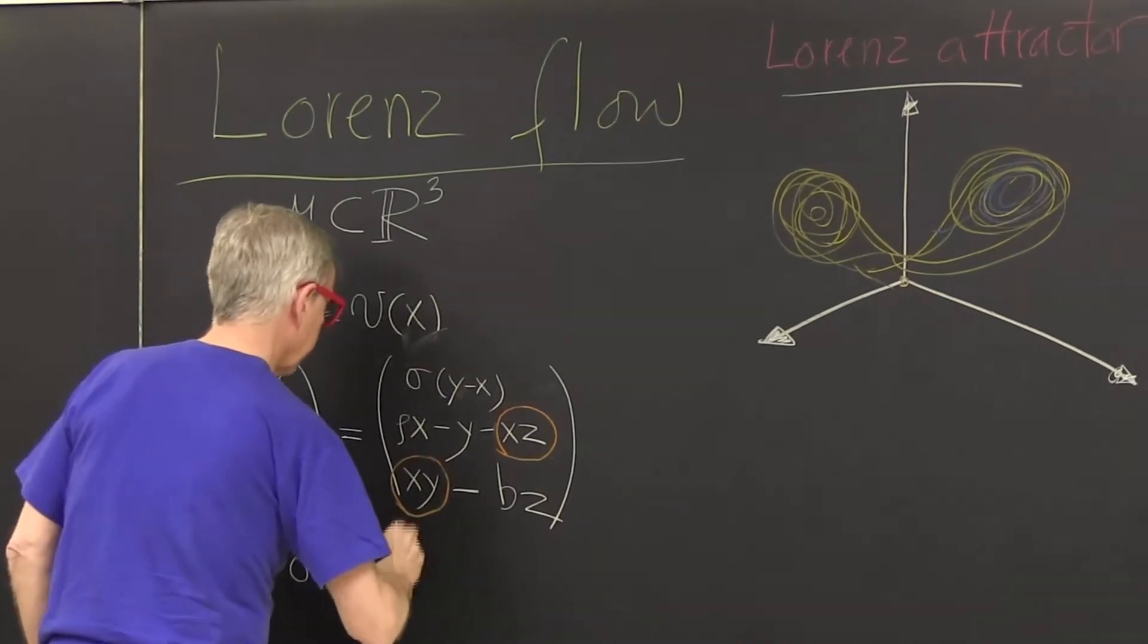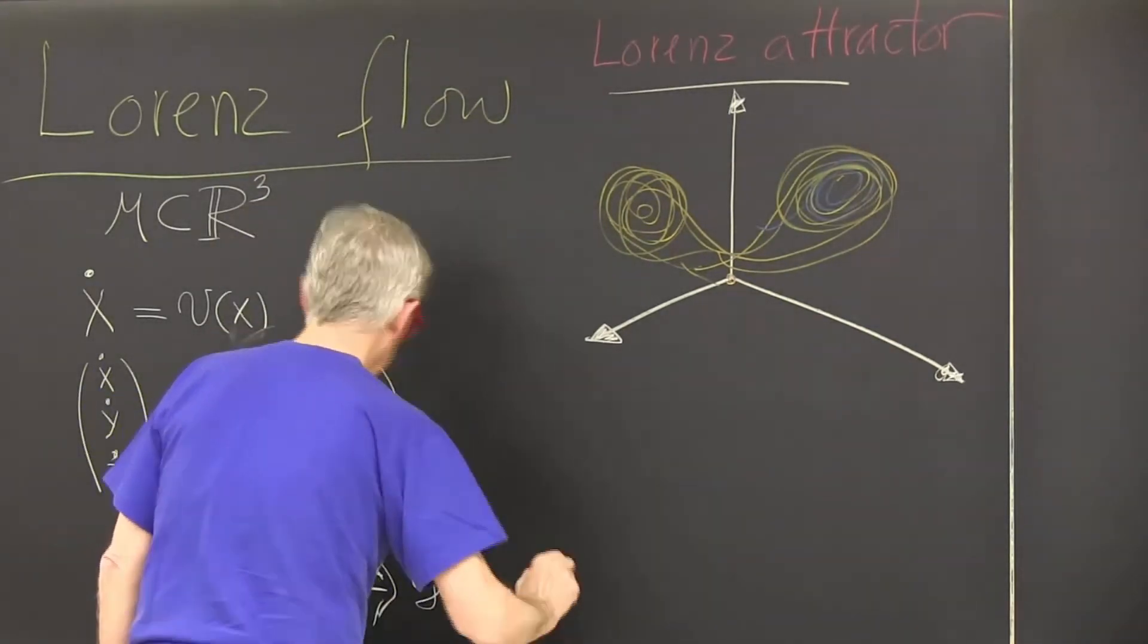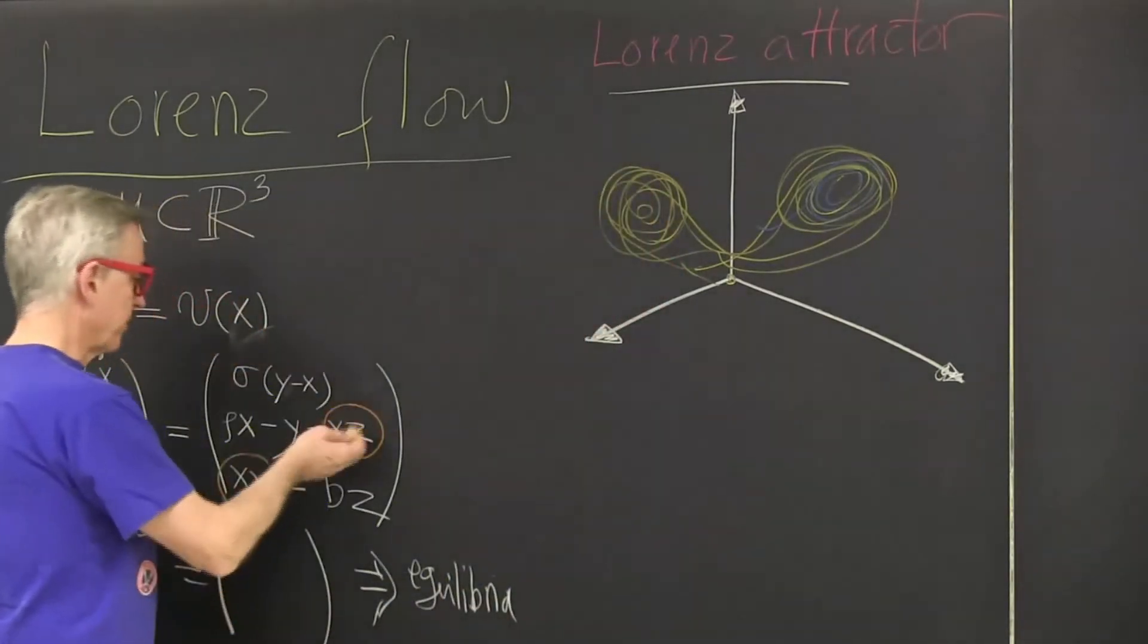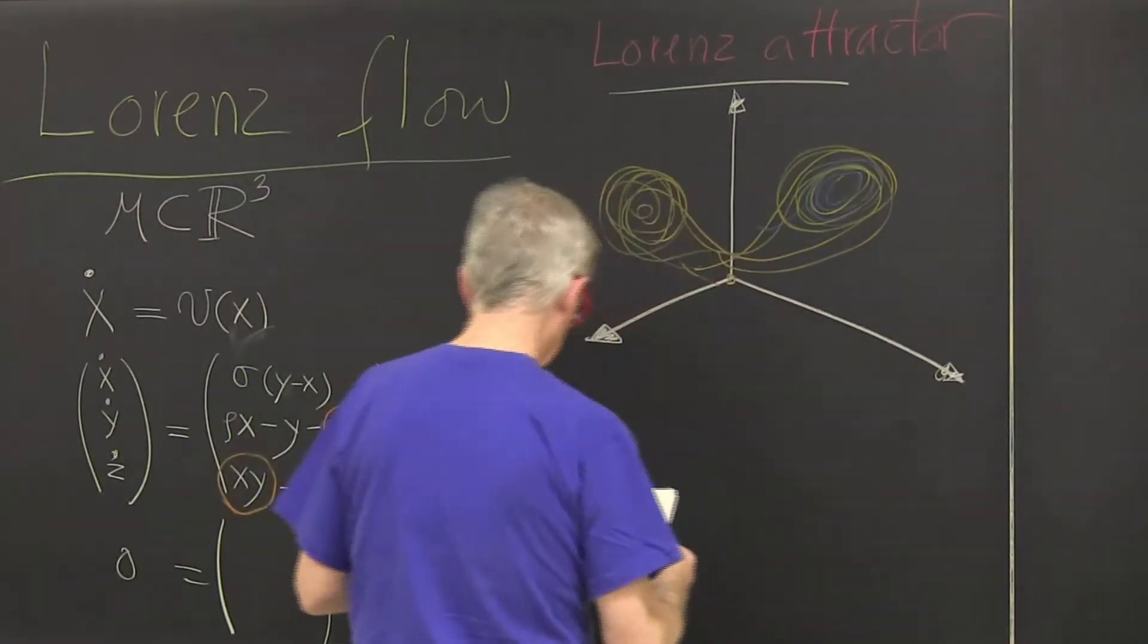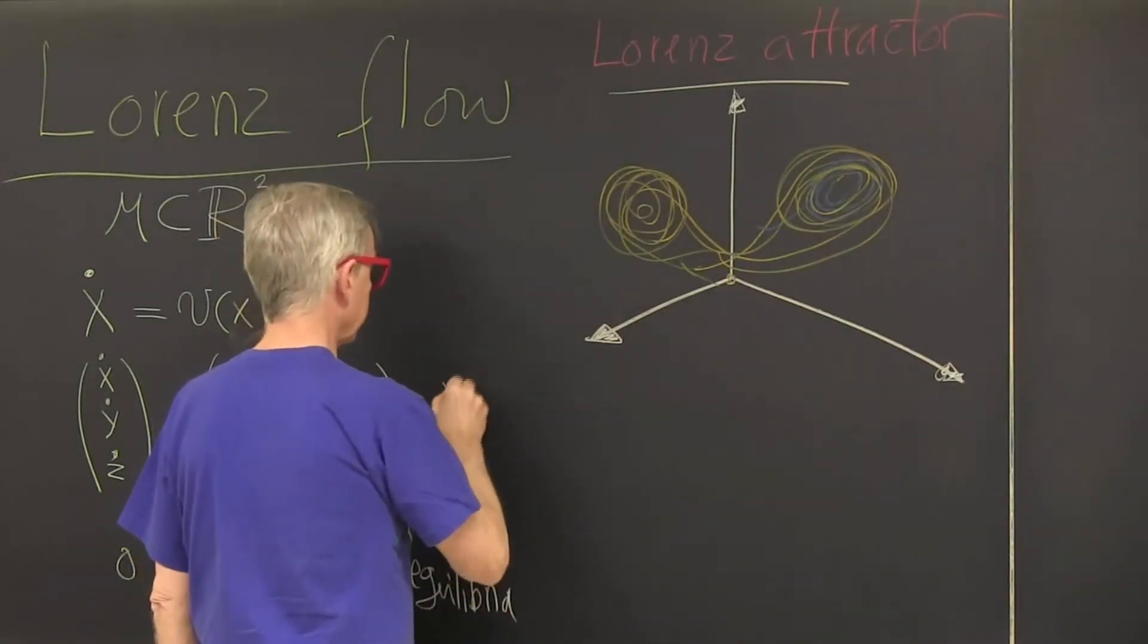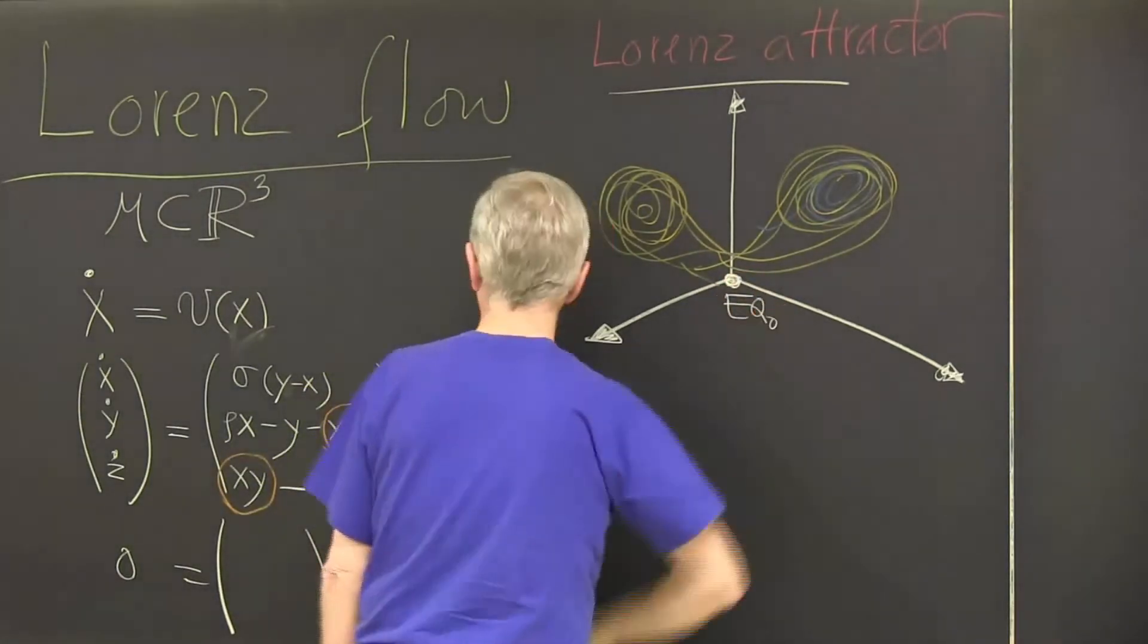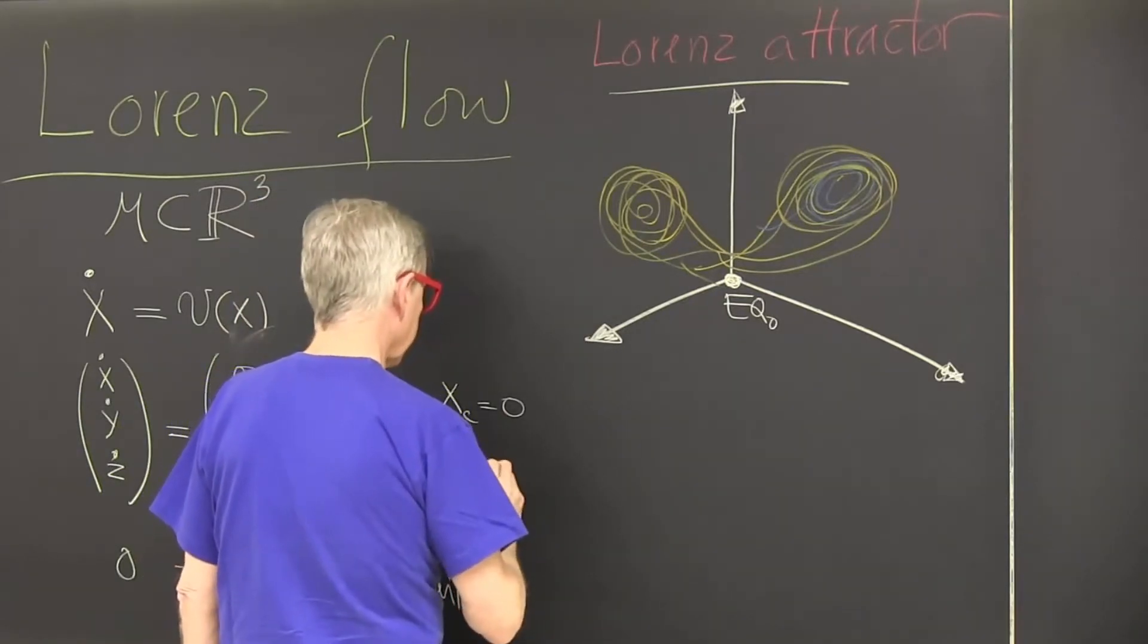So zero equals this gives you equilibrium. In three dimensions, that's a problem you can solve numerically. You can solve actually analytically. It's simple enough. This is bilinear. You end up in some fancy way with some quadratic equation. And you find that there are three solutions. There's kind of a trivial solution. If everybody is zero, that's an equilibrium. So there is equilibrium here.